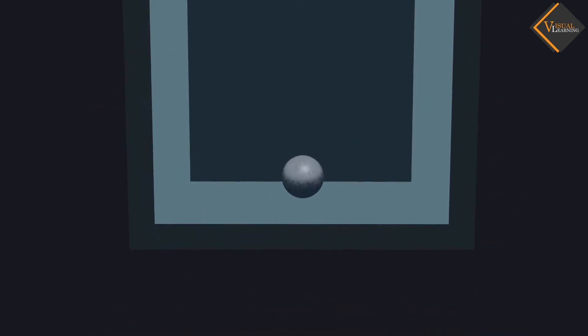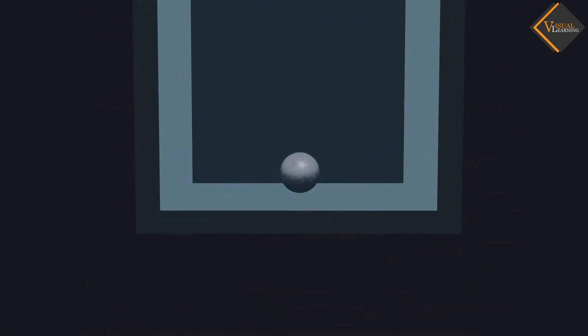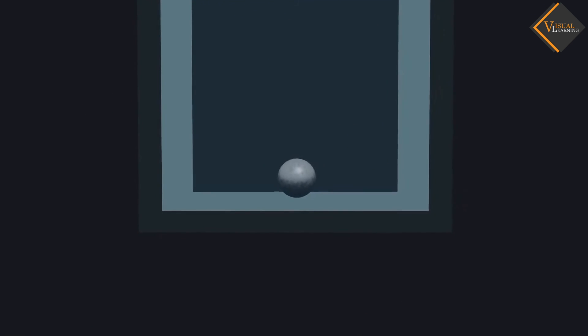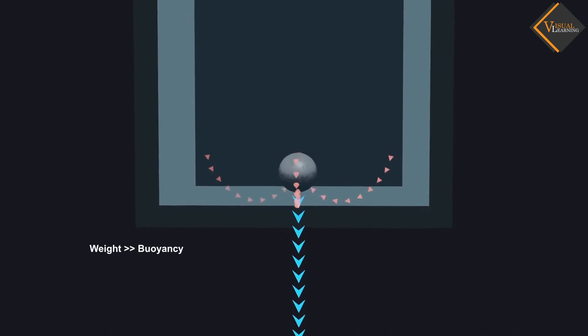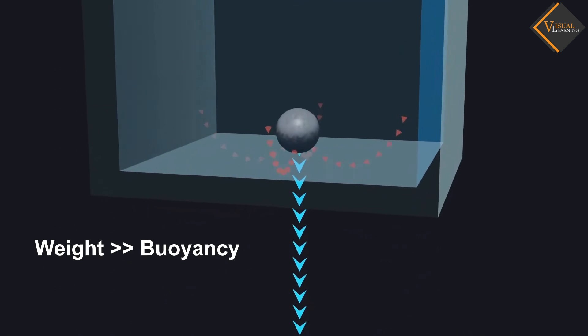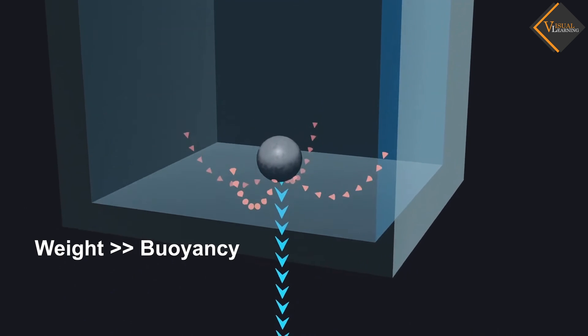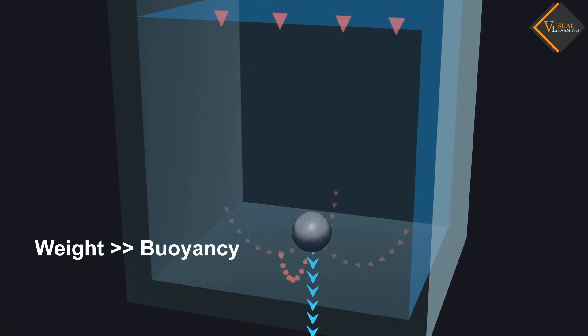This is because the mass of the iron ball is very large as compared to the mass of the plastic ball. Therefore, the downward force due to gravity is greater than the upward thrust.